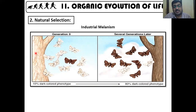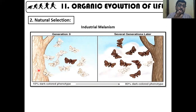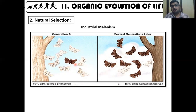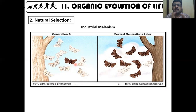Before industrialization, two types of moth existed: the lighter colored Biston betularia and the darker Biston carbonaria. Pre-industrialization, trees were covered with lichen — grayish in color. Lichen are indicators of pollution and never grow in polluted areas. When both types of moths sat on the tree bark, the lighter moth was camouflaged against the gray lichen while the darker moth was visible to predatory birds, which ate the dark ones. So the lighter variety had a higher relative population and the darker variety was less common.